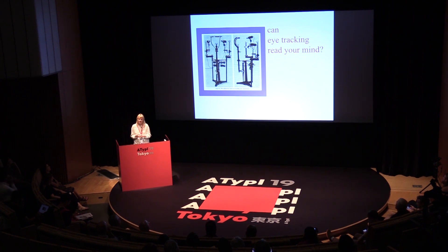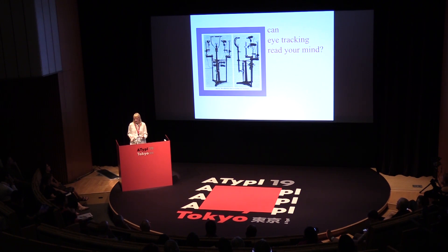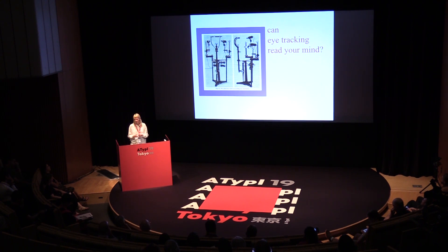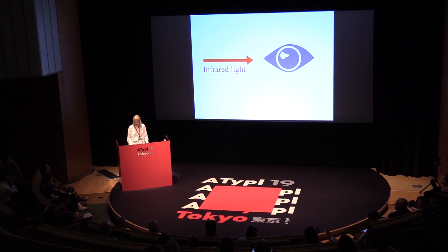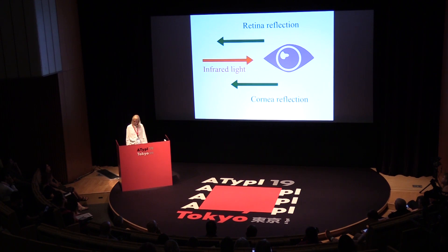The eye tracking system is a technology that has been in use for around a century, though it is still not very popular in typography research — it is more common in linguistics, psycholinguistics, and user experience. I believe this technology can also bring a lot of information about typography. Infrared light shines onto your face and reflects two parameters: retinal reflection, which helps find the center of the pupil, and corneal reflection. These two parameters pinpoint where you are actually looking.